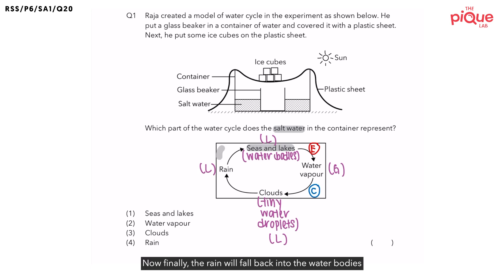Now finally, the rain will fall back into the water bodies and this whole cycle repeats itself. So this water cycle actually explains how on Earth there is a continuous supply of water for living organisms to survive.